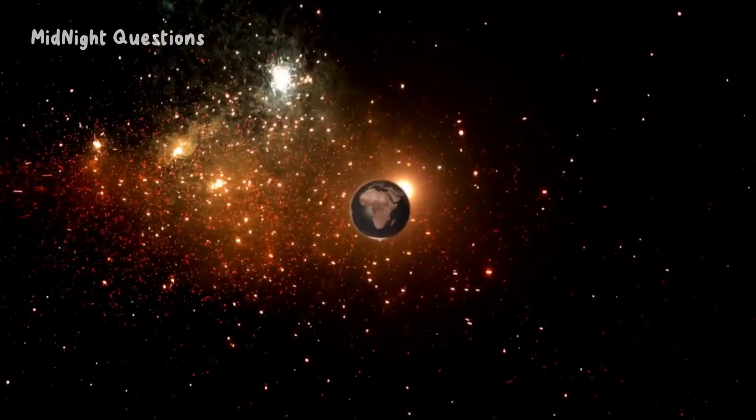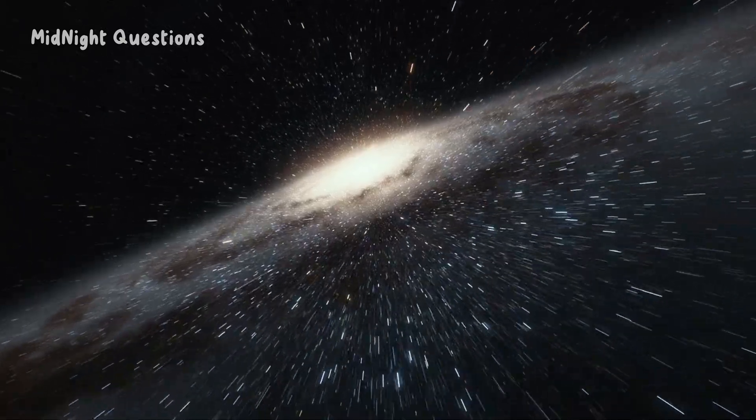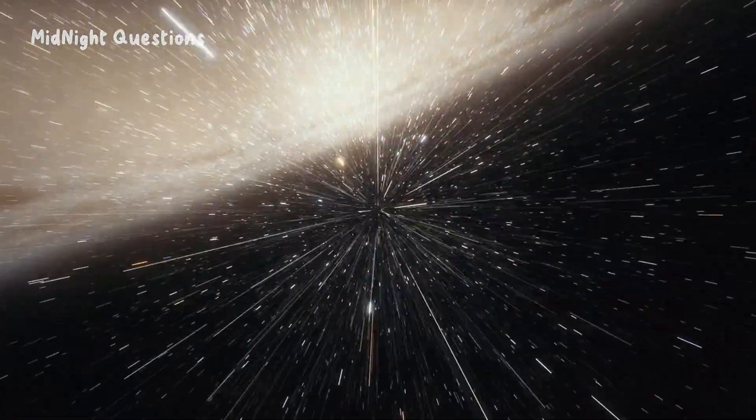Another way to understand the vastness of the universe is to consider the speed of light. Light travels at an astonishing 299,792,458 meters per second. Yet, even at that speed, it would take 100,000 years just to cross the Milky Way galaxy alone.